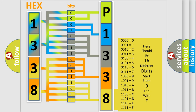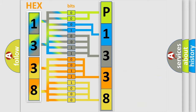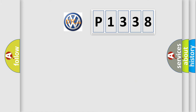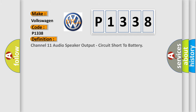We now know how the diagnostic tool translates the received information into a more comprehensible format. The number itself does not make sense to us if we cannot assign information about what it actually expresses. So, what does the diagnostic trouble code P1338 interpret specifically for Volkswagen? The basic definition is: Channel 11 audio speaker output, circuit short to battery.